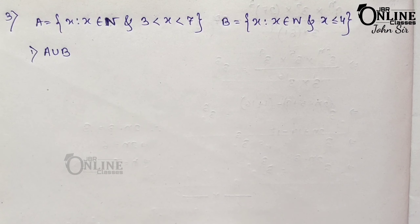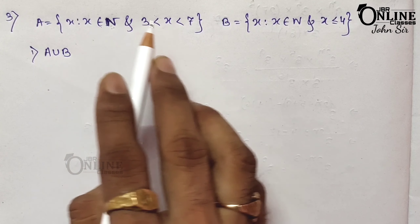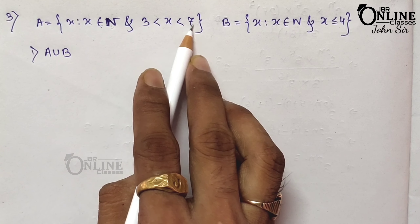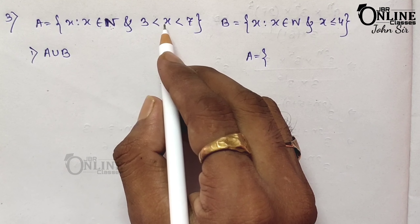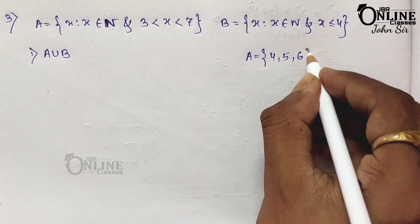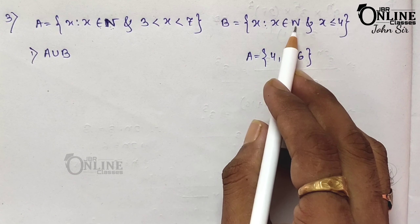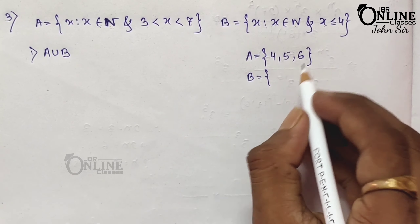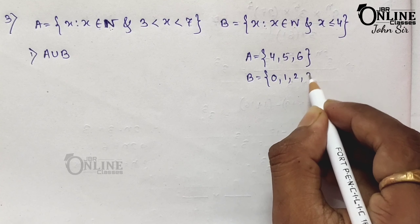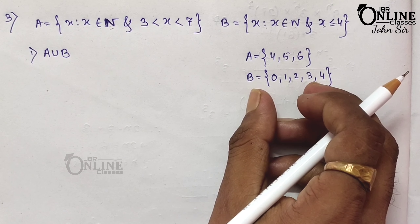Now sum number 3. Here A equals {x such that x belongs to N and 3 < x < 7}, so the elements are 4, 5, and 6 — since x must be strictly greater than 3. Set B equals {x such that x belongs to W and x ≤ 4}, so starting from 0: elements are 0, 1, 2, 3, and 4, since it's less than or equal to 4.